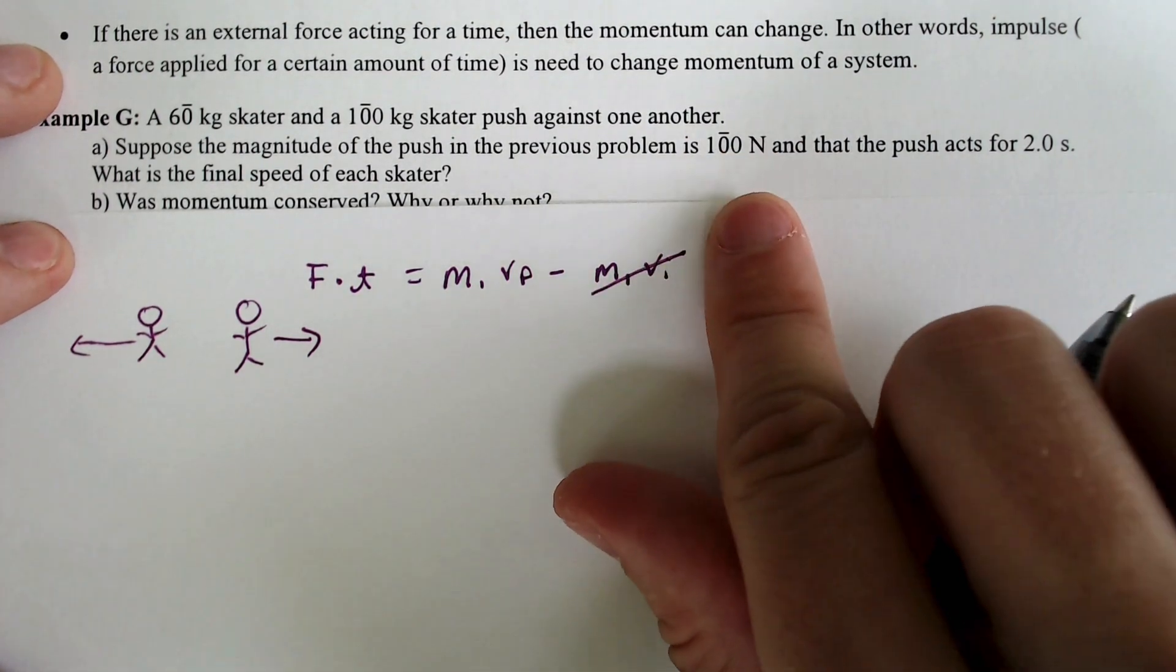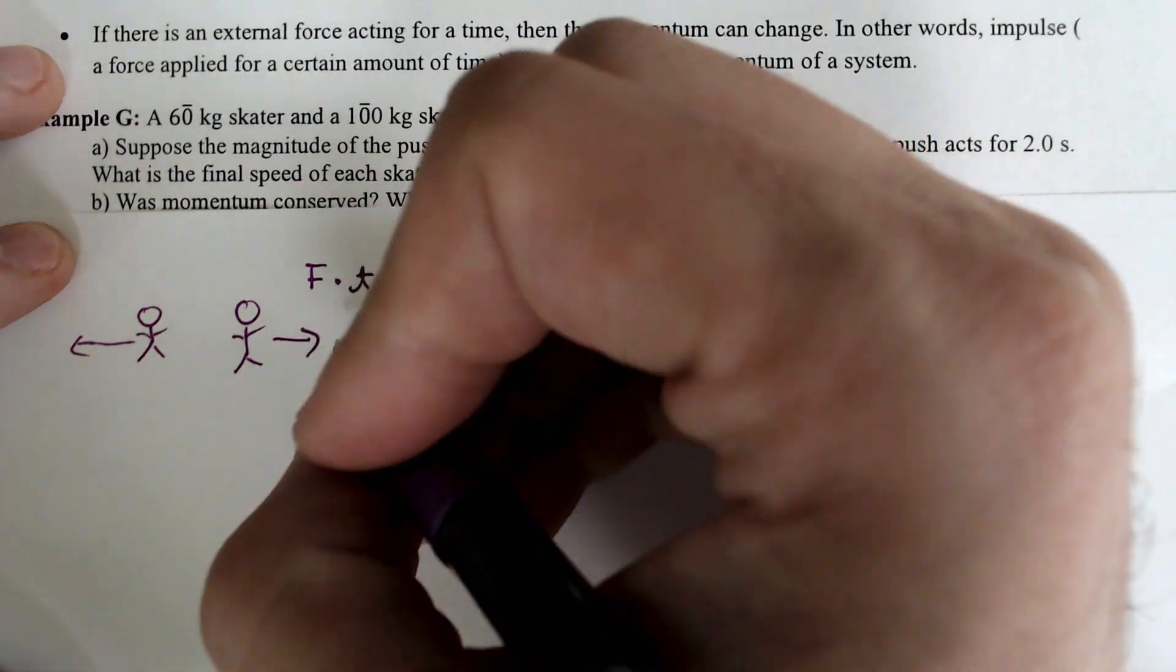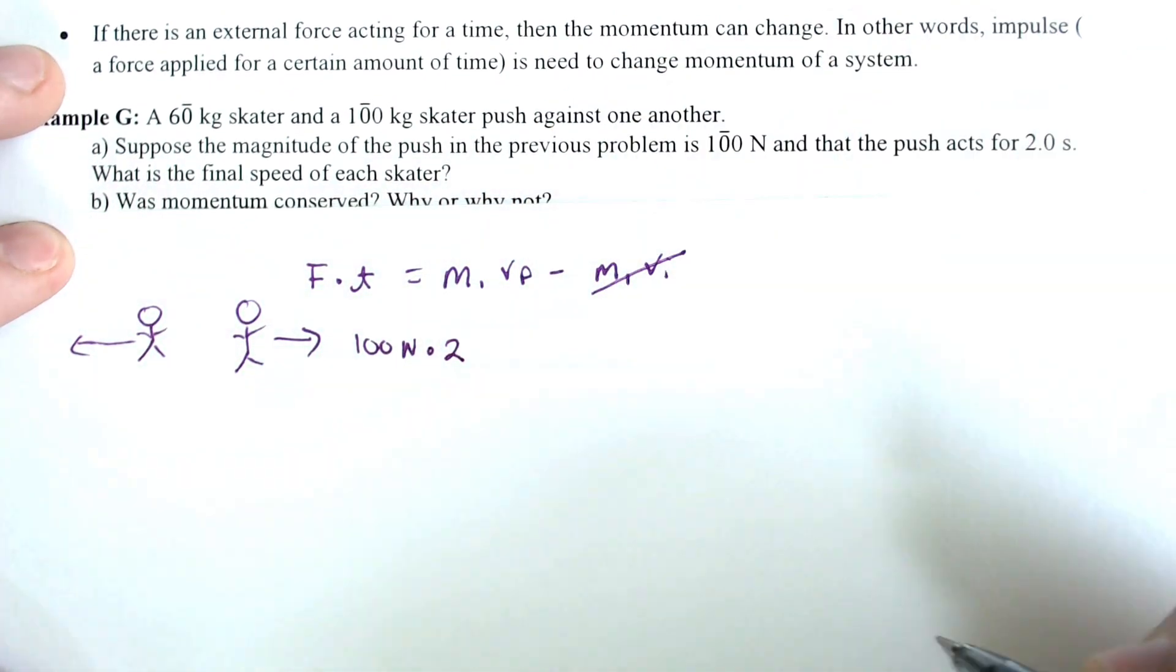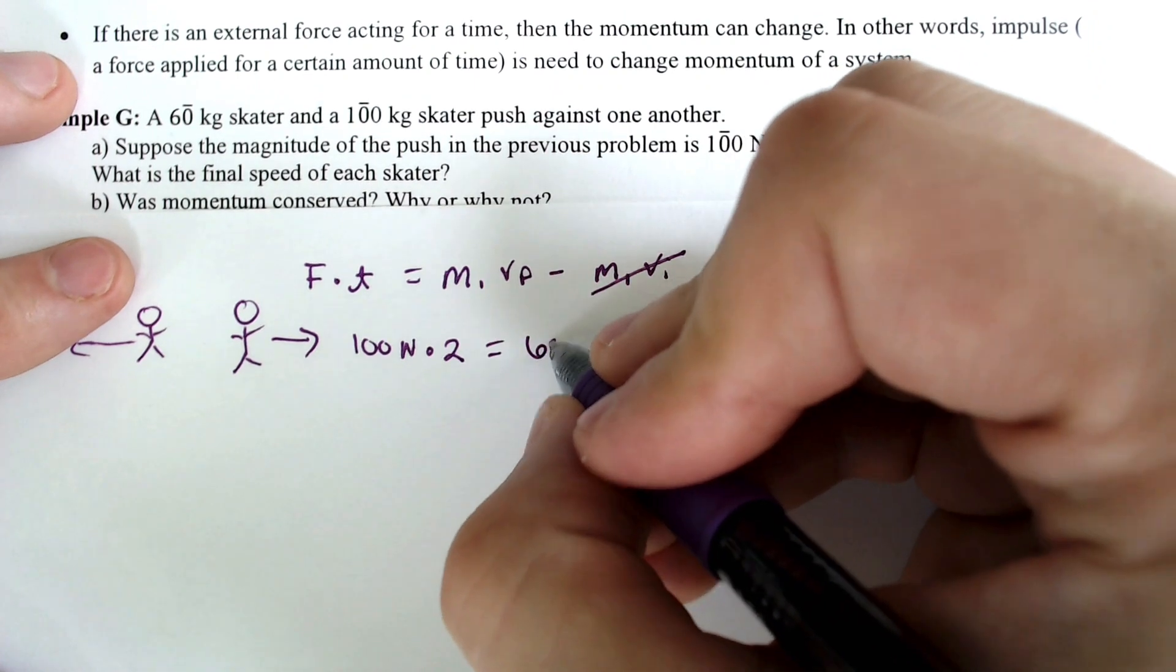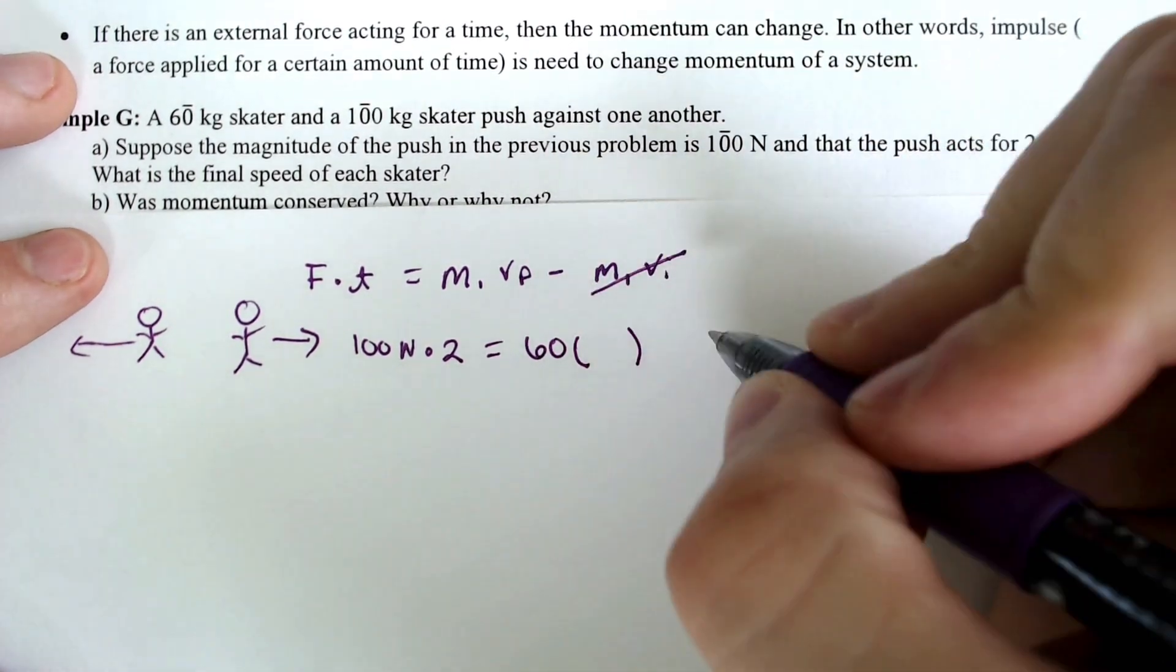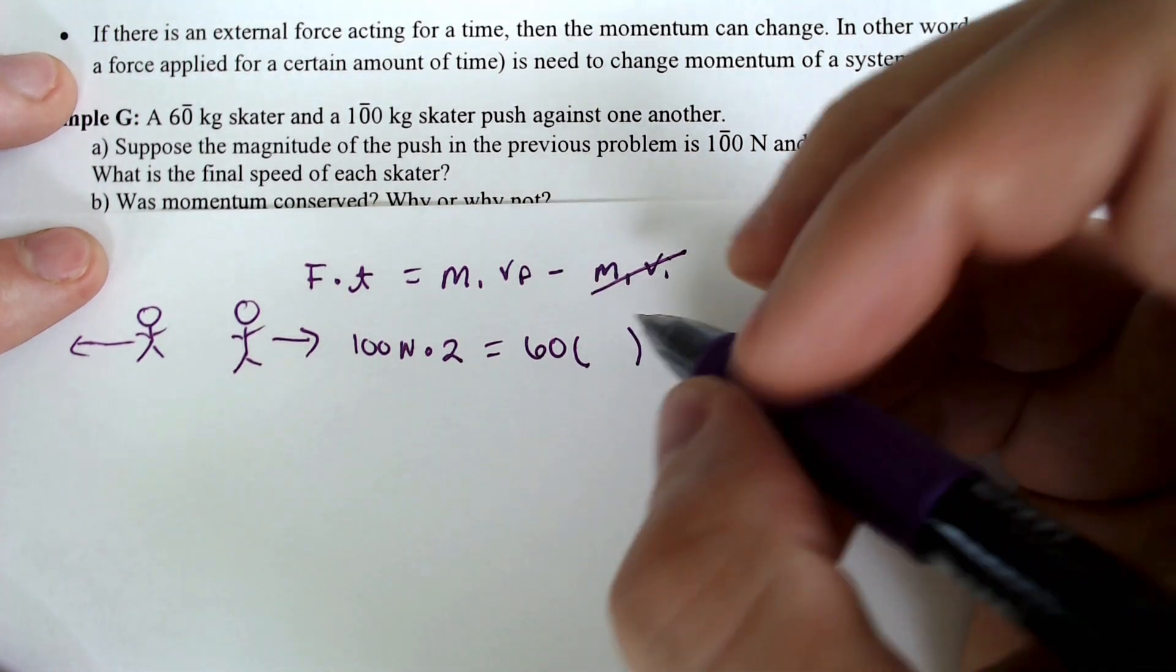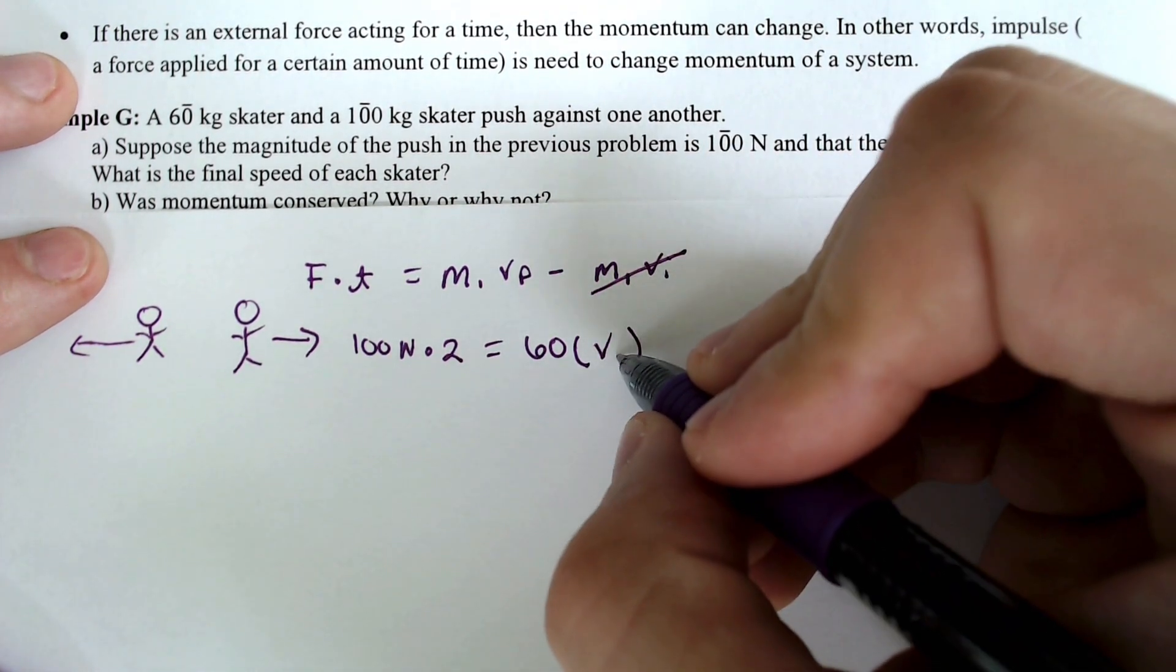They had 100 newtons acting on them for two seconds, so that would be 100 newtons times two seconds. And that would equal their mass, 60, times the velocity, which was unknown. We don't know in this case.